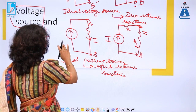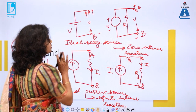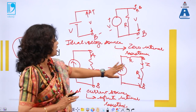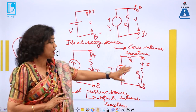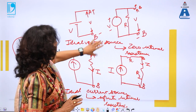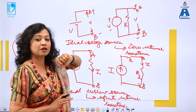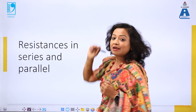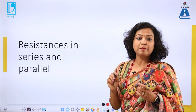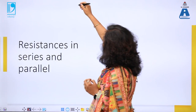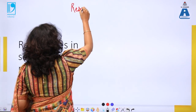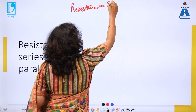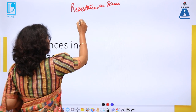To summarize: for voltage sources, voltage remains the same in parallel; for current sources, current remains the same in series. For an ideal voltage source, internal resistance is 0; for an ideal current source, internal resistance is infinite. Now let me start with resistances in series and parallel.